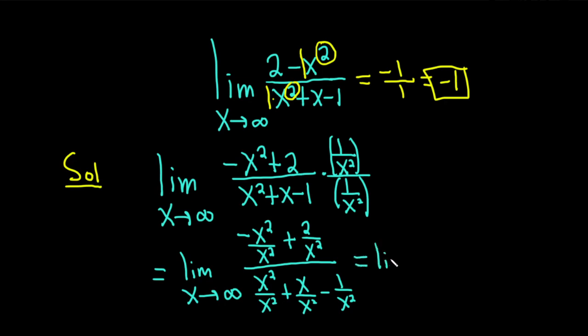This is equal to the limit as x approaches infinity. These cancel, so we get negative 1 plus 2 over x squared. And in the denominator, we have 1 plus, right, because these cancel. And then x over x squared is 1 over x, then minus 1 over x squared.